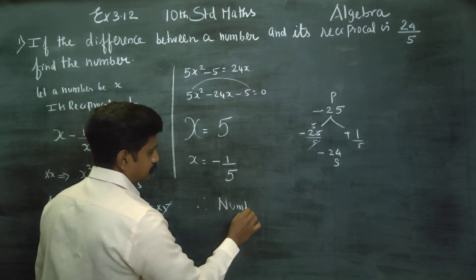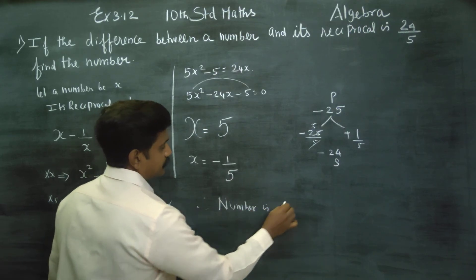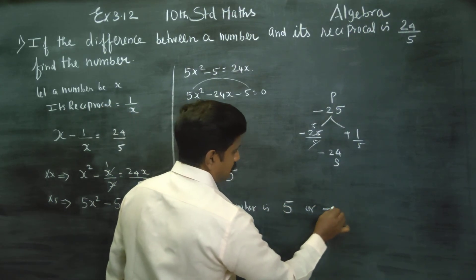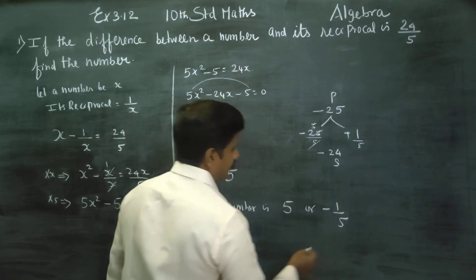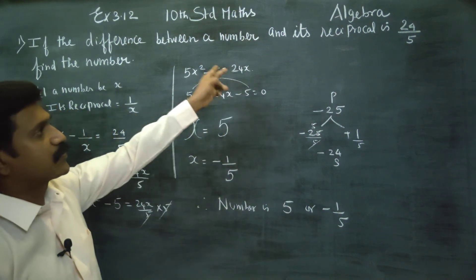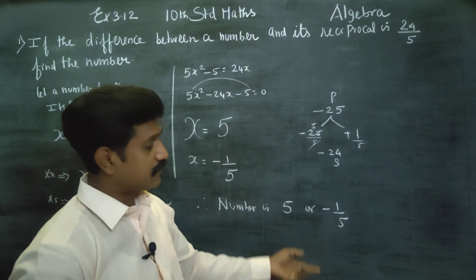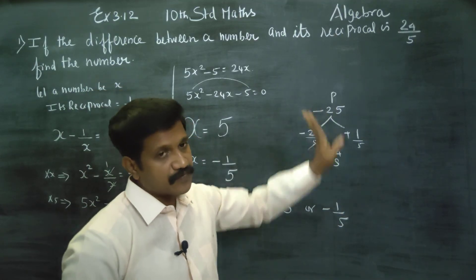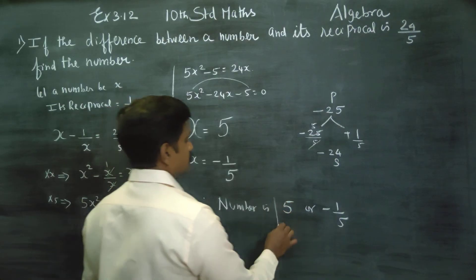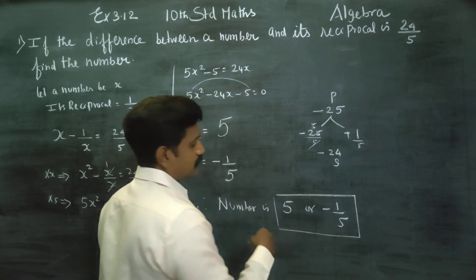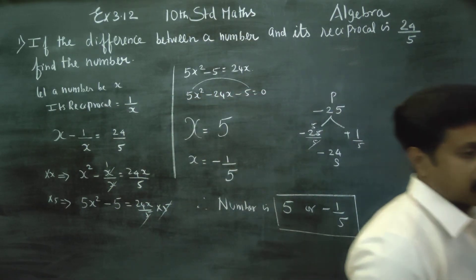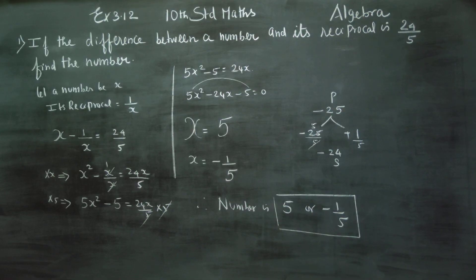We can verify that for both numbers, the difference between the number and its reciprocal equals 24 by 5. Thank you.